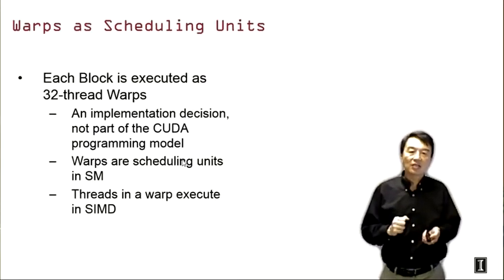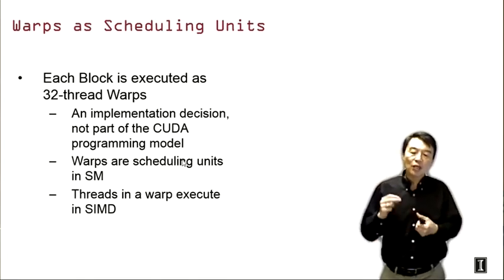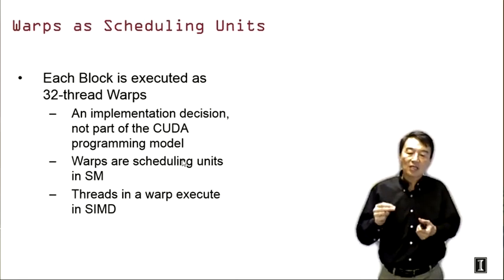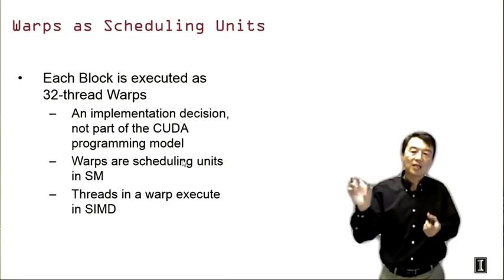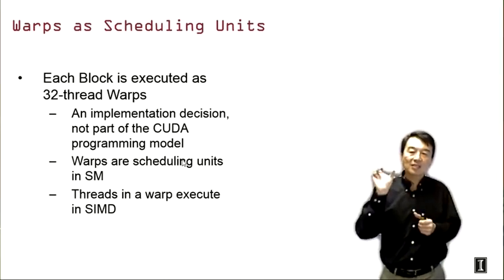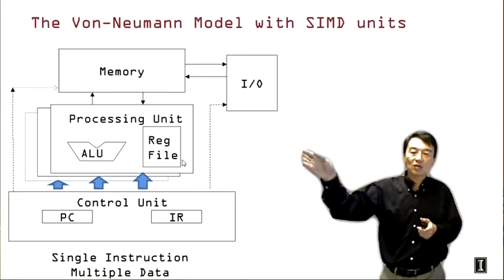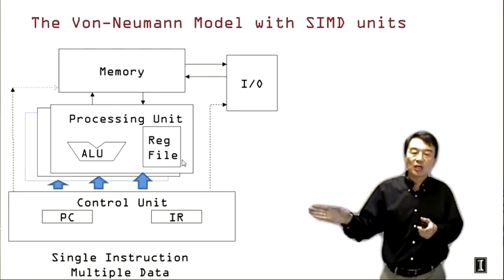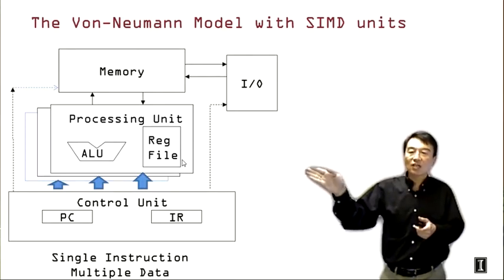Now that we understand the basics of SIMD execution, we can look at more details of thread execution in CUDA. Each thread block is actually executed as 32-thread warps — we divide each thread block into these warps and execute each warp as a SIMD unit. So 32 CUDA threads are executed in the SIMD model where only one instruction is fetched and all 32 threads execute that same instruction, each based on their own data.